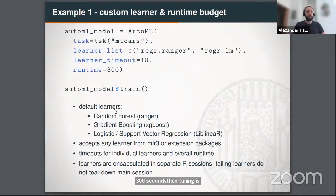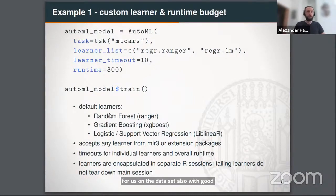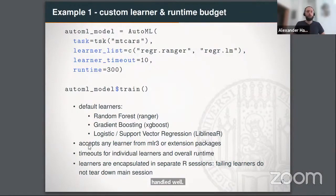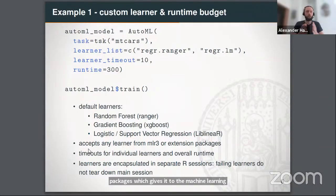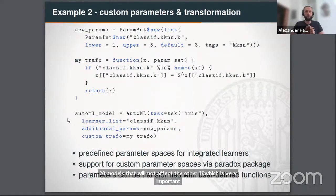By default, MLR3 AutoML ships with the Ranger random forest, gradient boosting from XGBoost, and logistic and support vector regression from liblinear. These showed stable performance across a variety of datasets. You can also input any learner from MLR3 or extension packages. Learners are encapsulated in separate R sessions, so if one of 20 models fails, it won't affect the other 19 — important for system stability. You can also add custom parameters to the search space.